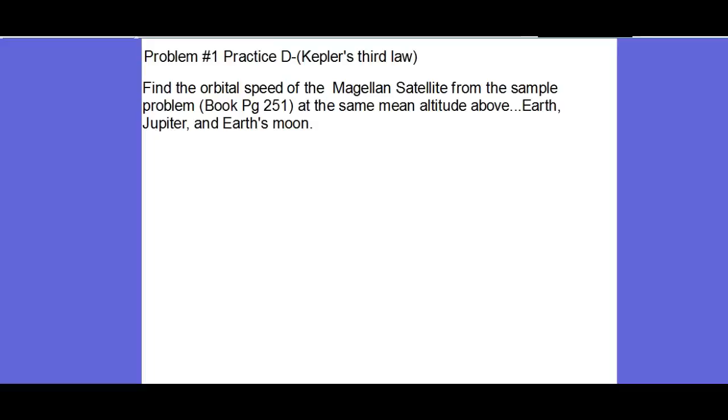All right, so I'm going to show you how to do this problem from your book. It's on page 251, practice D, and this asks you to find the orbital speed of the Magellan satellite.